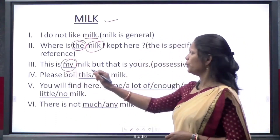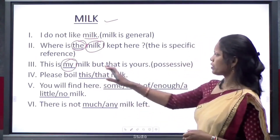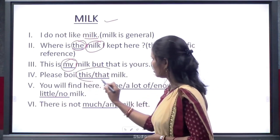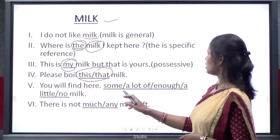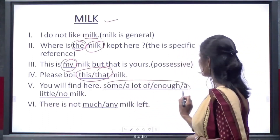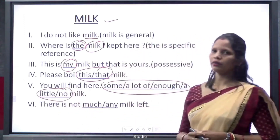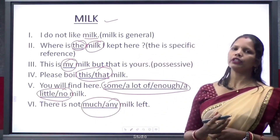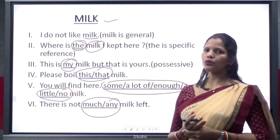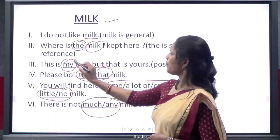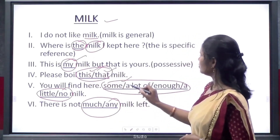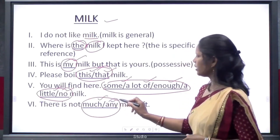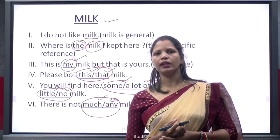In 'Please boil this or that milk', the demonstratives 'this' and 'that' are used. We also find words like 'some', 'a lot of', 'enough', 'all', 'no', 'much', and 'any' used before uncountable nouns, as in 'There is not much any milk left'.